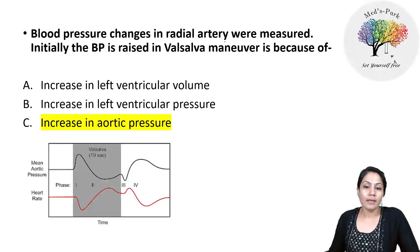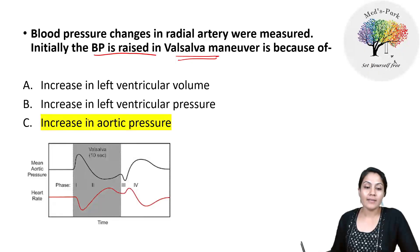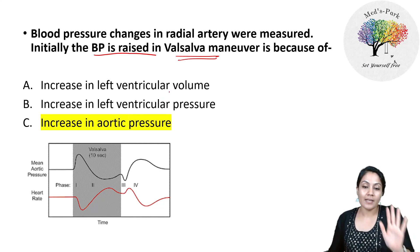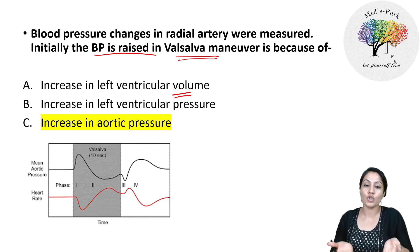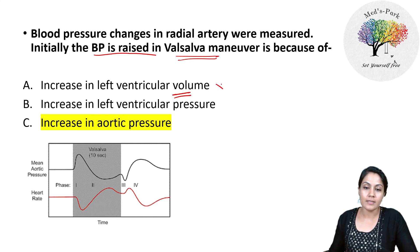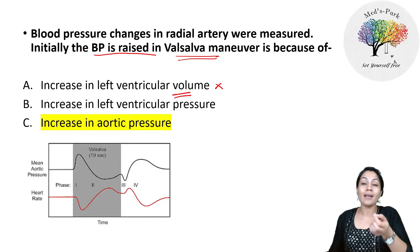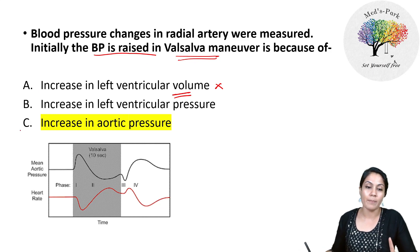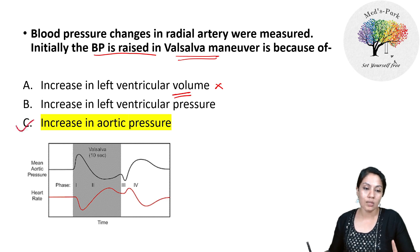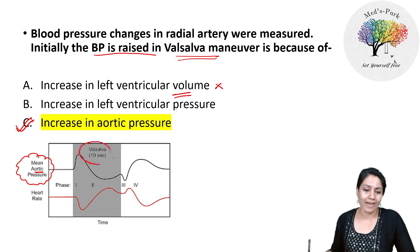Blood pressure in the radial artery was measured and was raised during the Valsalva maneuver — why? Volume increasing would decrease pressure, by Boyle's law — so that's excluded. During Valsalva, we apply positive pressure in the thorax by expiring against a closed glottis. Intrathoracic pressure increases, and immediately the aortic pressure will increase due to compression. This is the most appropriate answer. According to the diagram, mean aortic pressure immediately increases during Valsalva, while heart rate decreases.